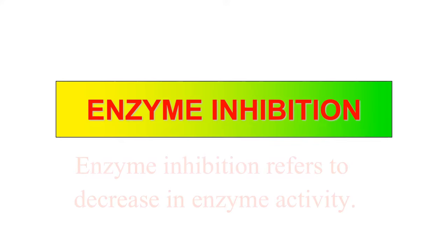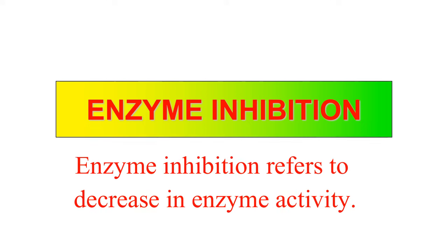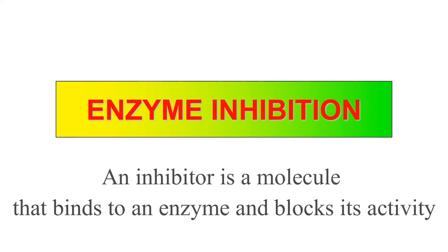Hello everyone, I am Dr. Neeraj and in this video we will discuss enzyme inhibition and its types. Enzyme inhibition is a process by which a compound or molecule inhibits enzyme activity. That molecule may bind to the active site or another portion of the enzyme, and that binding alters or inhibits the activity of the enzyme. The particular molecule that causes inhibition is known as an inhibitor.